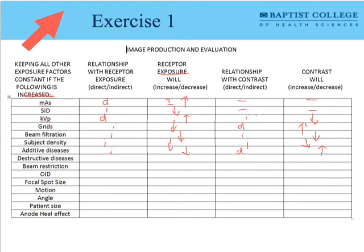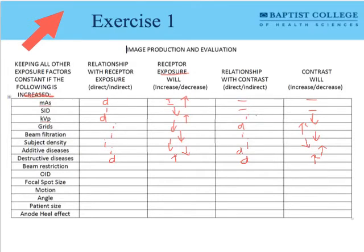Destructive disease has a direct relationship with receptor exposure. As a destructive process increases — like an osteolytic lesion in the bone — we'll actually see a decrease in density on the image, so destructive diseases increase image darkening or exposure. In terms of contrast, it's also a direct relationship: as the destructive process increases, we see an increase in contrast between the destructive process and the healthy tissue around it.